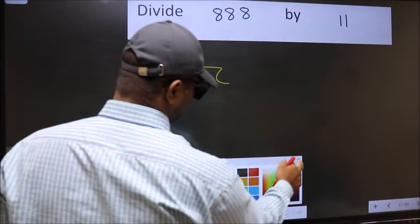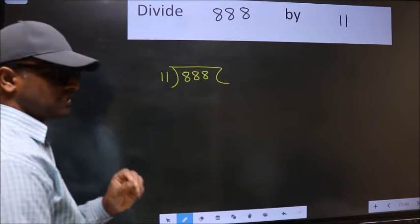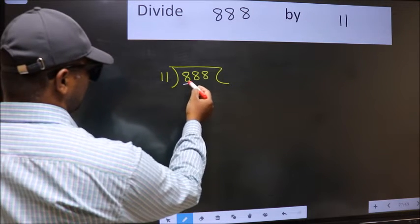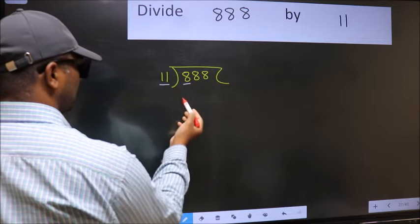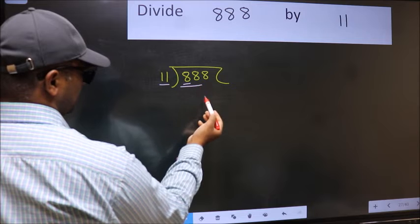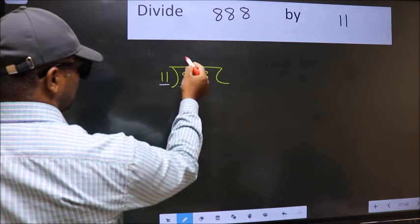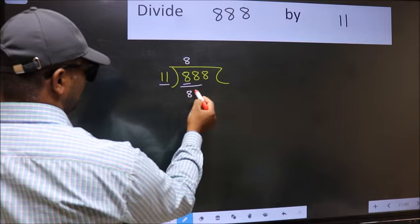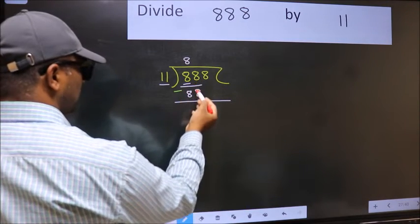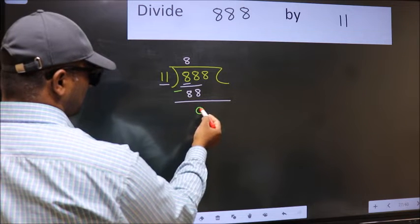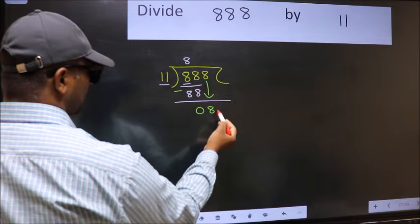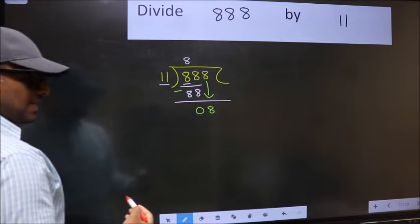Step 1: here we have 8 and 11. Since 8 is smaller than 11, we take two numbers: 88. In the 11 times table, 11 × 8 = 88. Now subtract: 88 minus 88 equals 0. After this, bring down the next number, so bring 8 down.